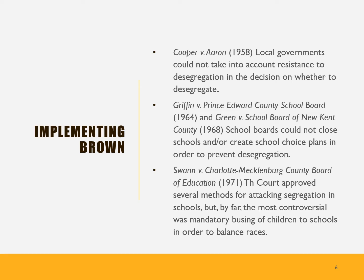In Griffin versus Prince Edward County School Board and Green versus School Board of New Kent County, the school boards were told that they could not close schools or create school choice plans or give people money to go to non-public schools in order to circumvent segregation. What you saw were a lot of communities would say, we're not going to have schools here anymore — we're just going to give everybody with a school-age child a chance to go to private academies. And of course those private academies would be allowed to decide whether to be segregated. The Supreme Court said that was not acceptable.